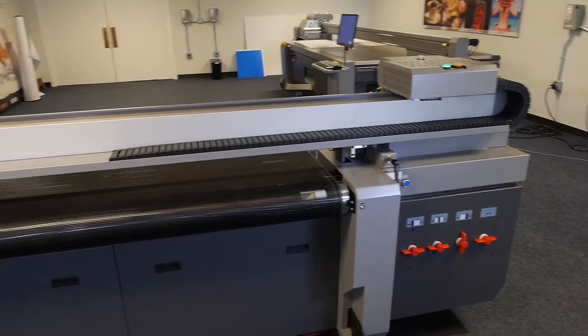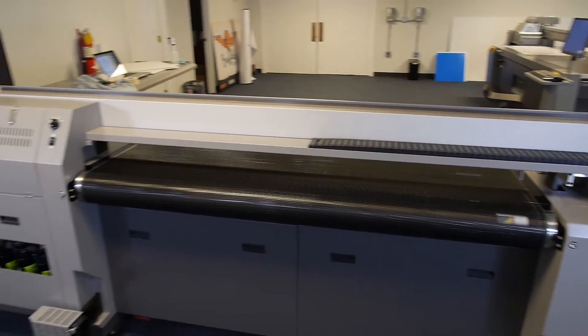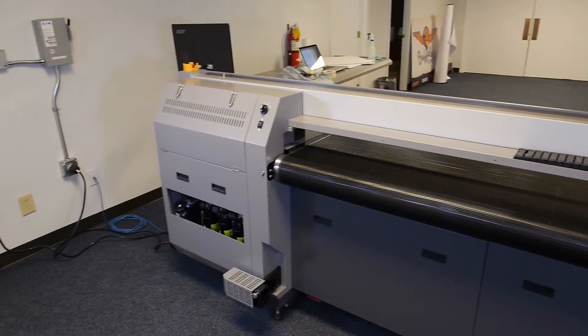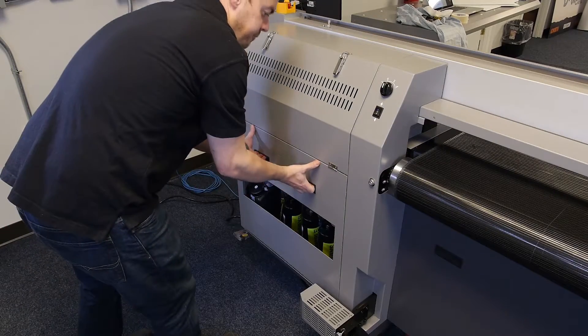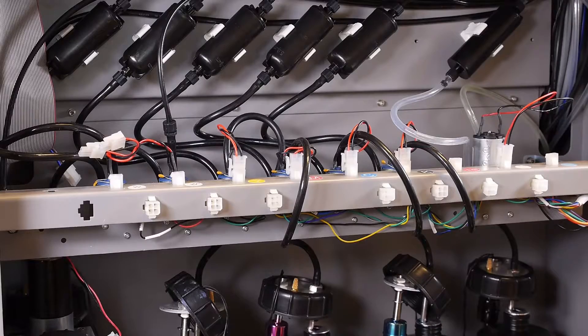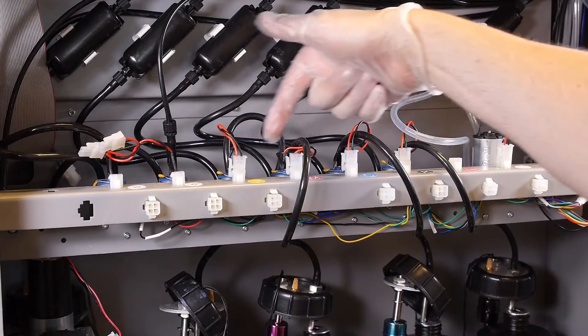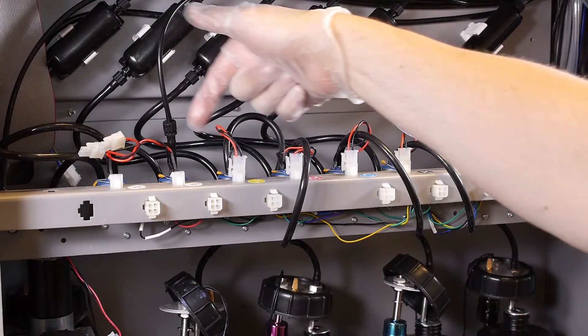Locate the ink pump. It is located in the back of the printer above the main ink tanks. You may need to either open a panel or open a drawer in order to access the pumps. The ink pumps will be the smaller pump with a blue top.